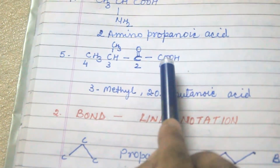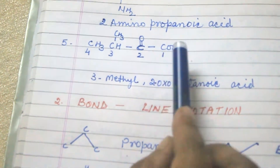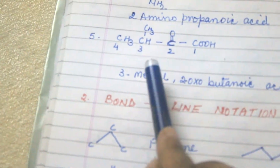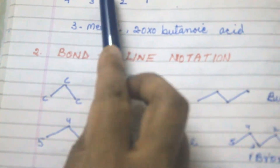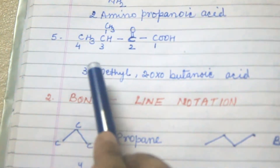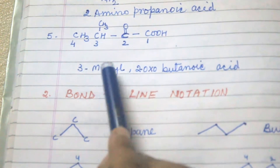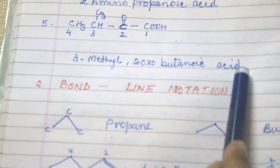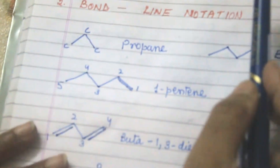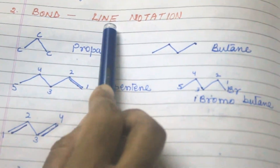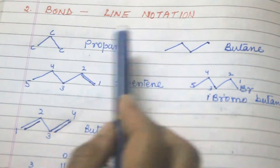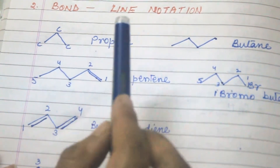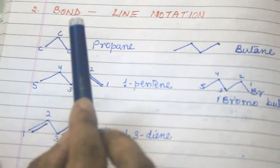The next example: COOH has more priority than the methyl and ketone groups, so we number from the COOH end. According to alphabetical order the name is 3-methyl-2-oxobutanoic acid.